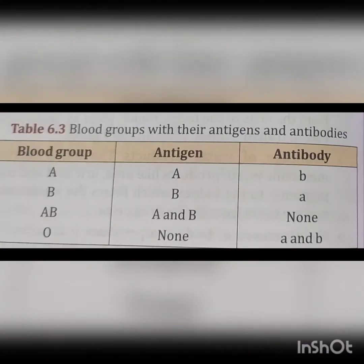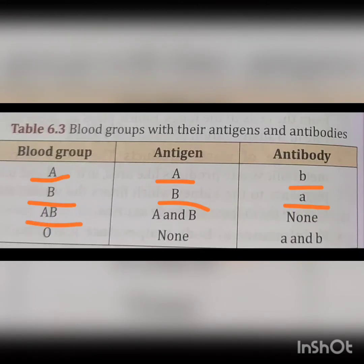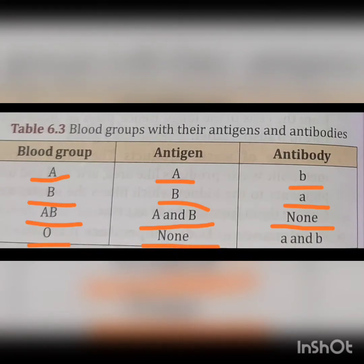Here is the description of the four types of blood group along with the antigens and antibodies present in each. Blood group A has antigen A and antibody B. Blood group B has antigen B and antibody A. Blood group AB has antigens A and B and no antibodies. Blood group O has no antigens, and both A and B antibodies are present.